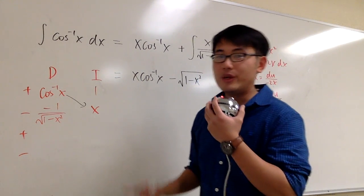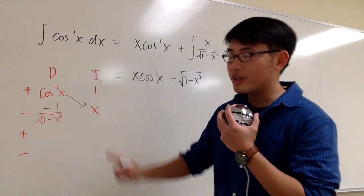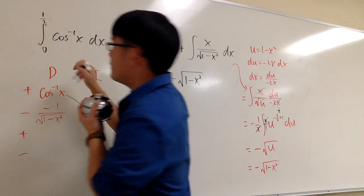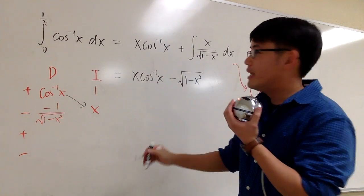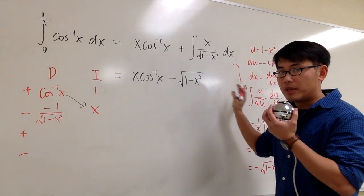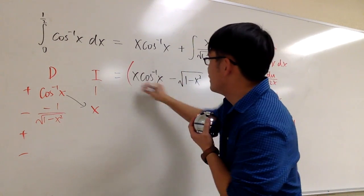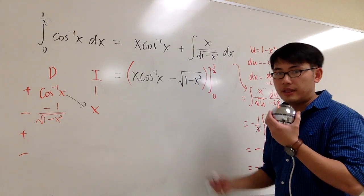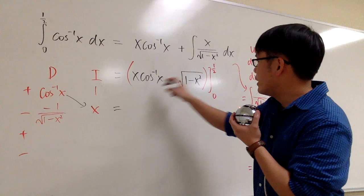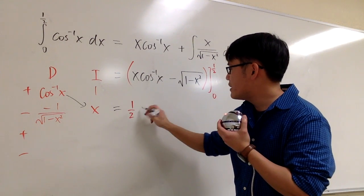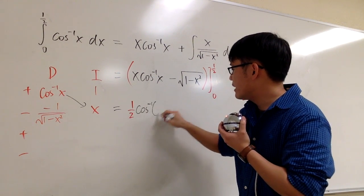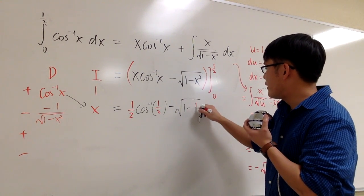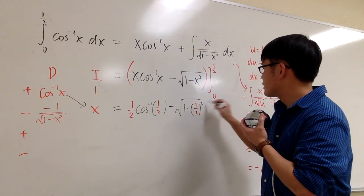However, in the book the question has limits. We should always focus on finding the antiderivative first, then apply the limits. The limits are from 0 to 1/2 — that's the original question. Now we have the antiderivative, and since it's a definite integral we don't need the plus C. We evaluate from 0 to 1/2, plugging in 1/2: we get 1/2 times inverse cosine of 1/2, minus square root of 1 minus (1/2) squared.